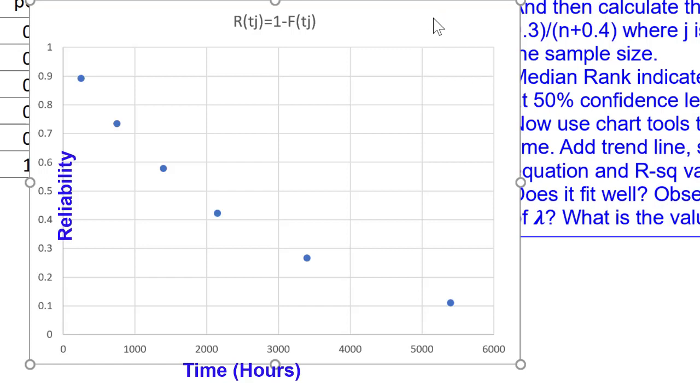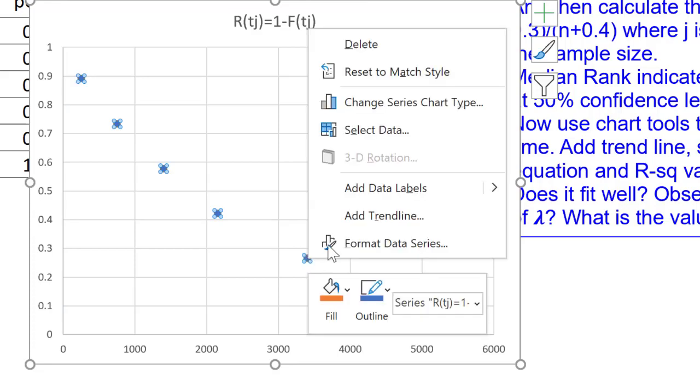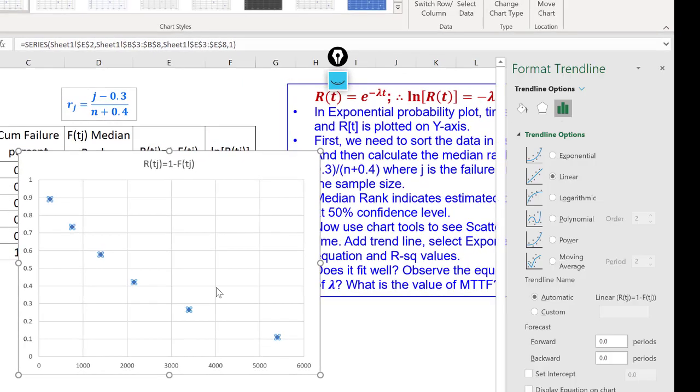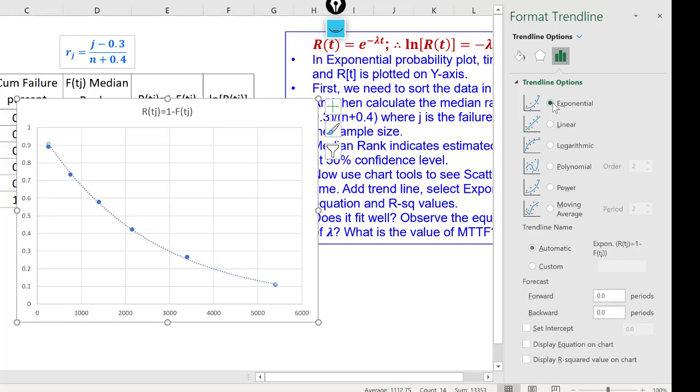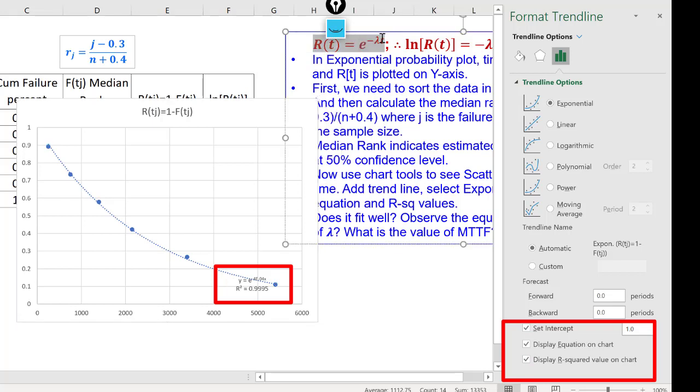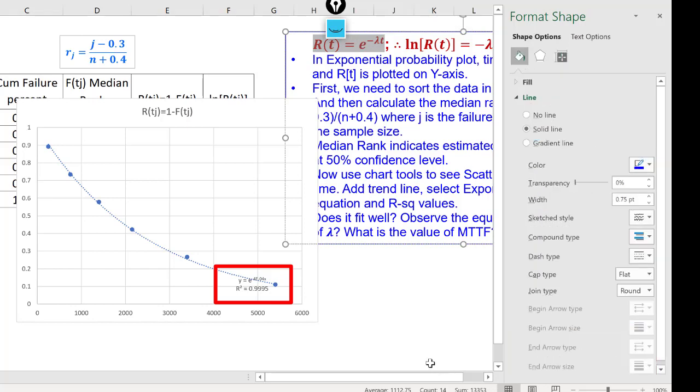Now, we can add a trend line to the scatter plot. Select any point on the scatter plot. Right click on the mouse and add trend line. Now, you have to select exponential. And you have to choose display equation on the chart, display R square value on the chart, and also set intercept equal to 1. Because our equation is R(t) equal to e to the power minus lambda t. There is no constant.